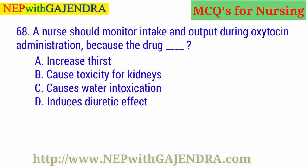A nurse should monitor intake and output during oxytocin administration because the drug: A. Increases thirst. B. Causes toxicity for kidneys. C. Causes water intoxication. D. Induces diuretic effect. The right answer is C: Causes water intoxication.